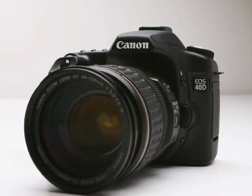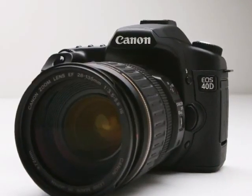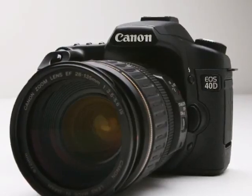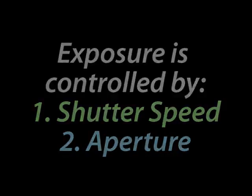The two most critical factors of a camera's machinery which determine how much light is entering the camera are: number one, shutter speed — this is the length of time the shutter is open and is exposing light to the digital sensor. Two is aperture; this is the diameter of the opening.